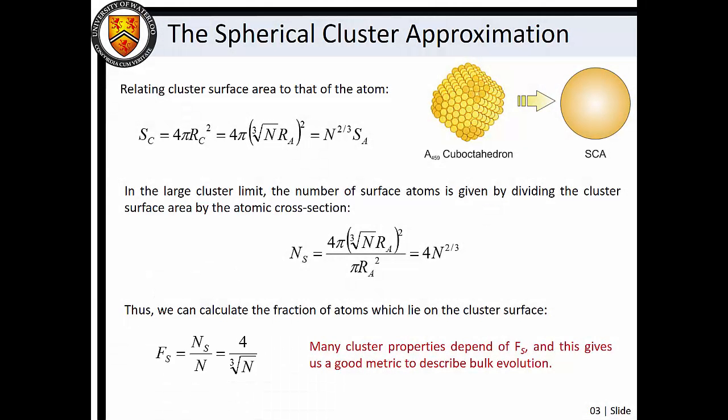The fraction of surface atoms is a useful index since many cluster properties depend on FS, and this gives us a good metric to describe bulk evolution.